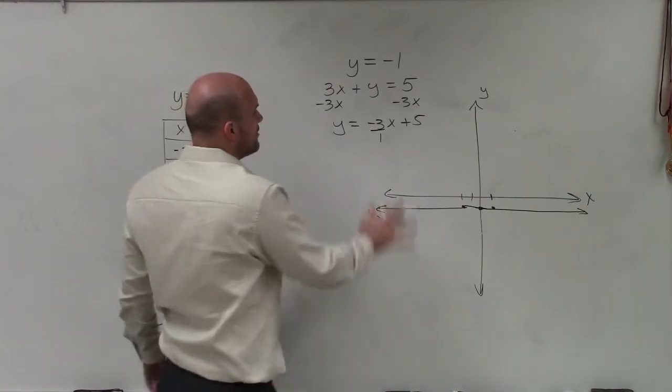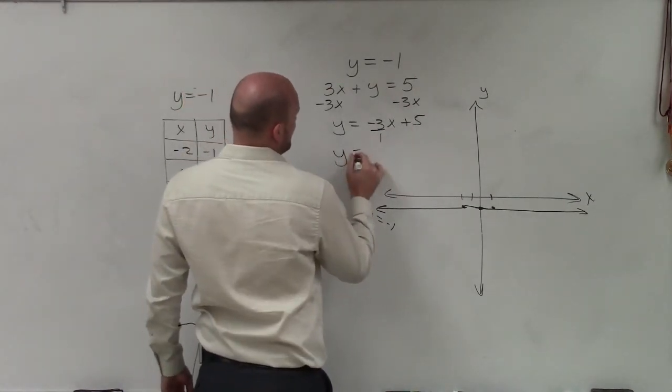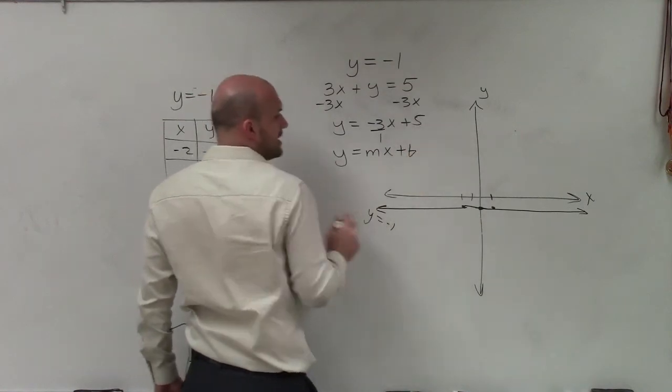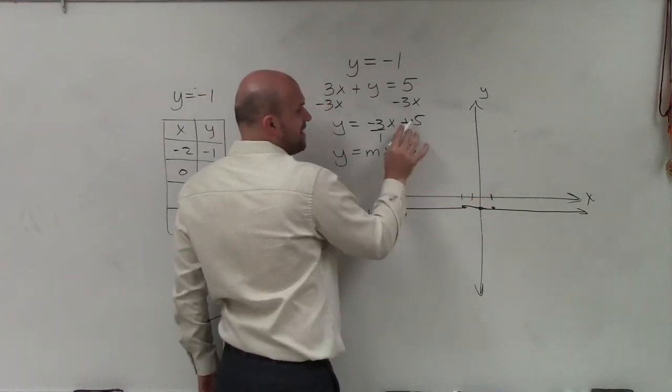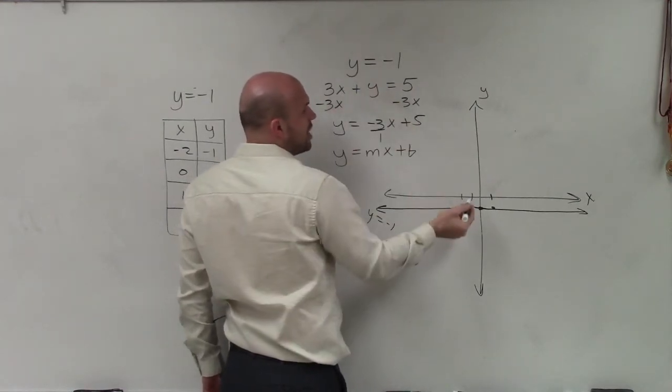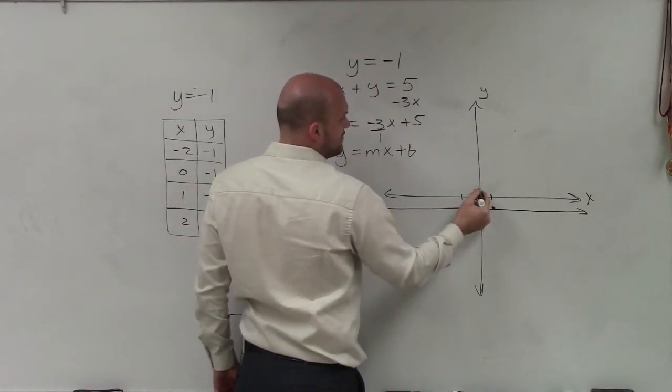So now remember, slope-intercept form, we have this as y equals mx plus b, where b is going to represent our y-intercept. So I'm going to go up 5 units to represent where this line is going to cross the y-axis. So I go up to 5.